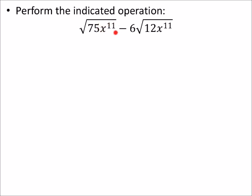a lot of people would just say, well, I got this x to the 11th and this x to the 11th, so I can just combine the 75 and the 12. No, that is not how this is going to work.